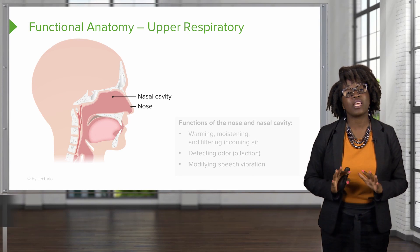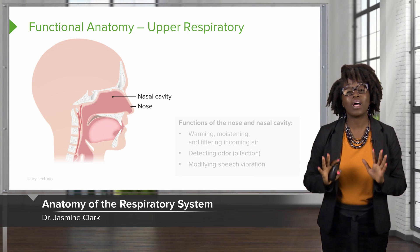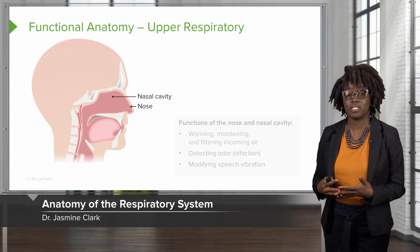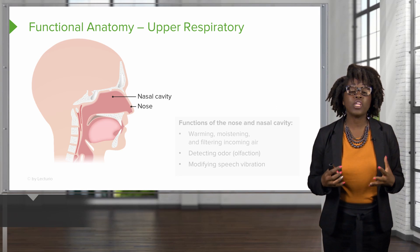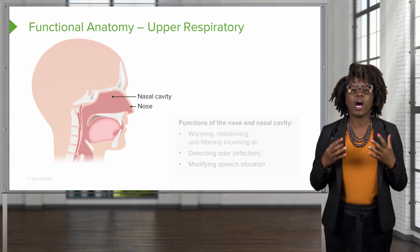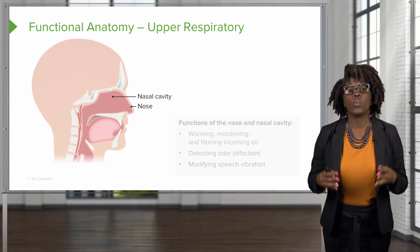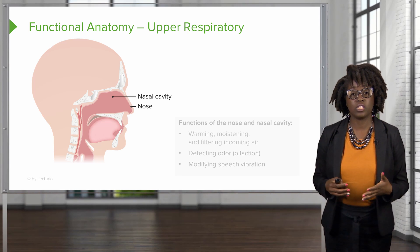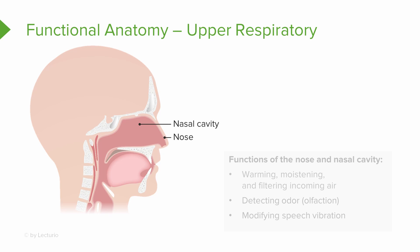Now let's look at the functional anatomy of the respiratory system. Starting with the upper portion, or the upper respiratory tract, we have three major organs. We have our nose and nasal cavity, which are important for warming of air, moistening of air, as well as filtering incoming air. We also use our nose and nasal cavity for detecting odor, or olfaction.